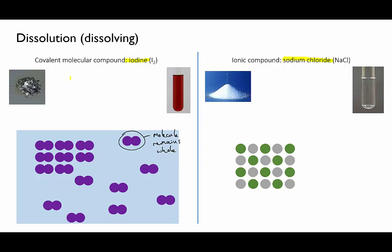At a symbolic level, we could represent this process using an equation like this, where the subscripts here indicate the change in state from solid to aqueous. Notice that the formula of the substance doesn't change. It's still I2. All that has changed is essentially the surroundings of each molecule.